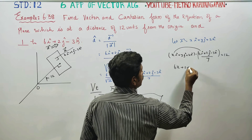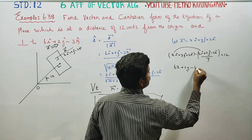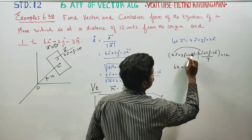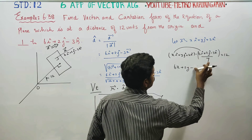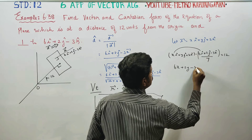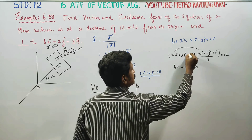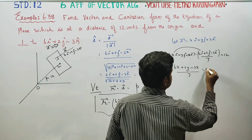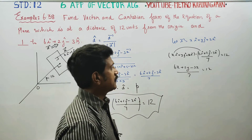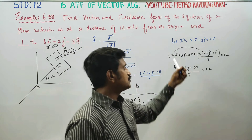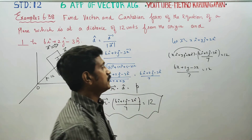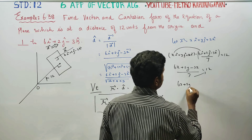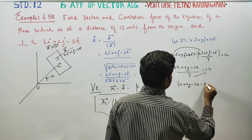Performing the dot product: 6 times x is 6x, 2 times y is 2y, and minus 3 times z is minus 3z. Since i·i, j·j, and k·k each equal 1, the result is (6x + 2y - 3z) / 7 = 12. Multiplying both sides by 7 gives 6x + 2y - 3z = 84.